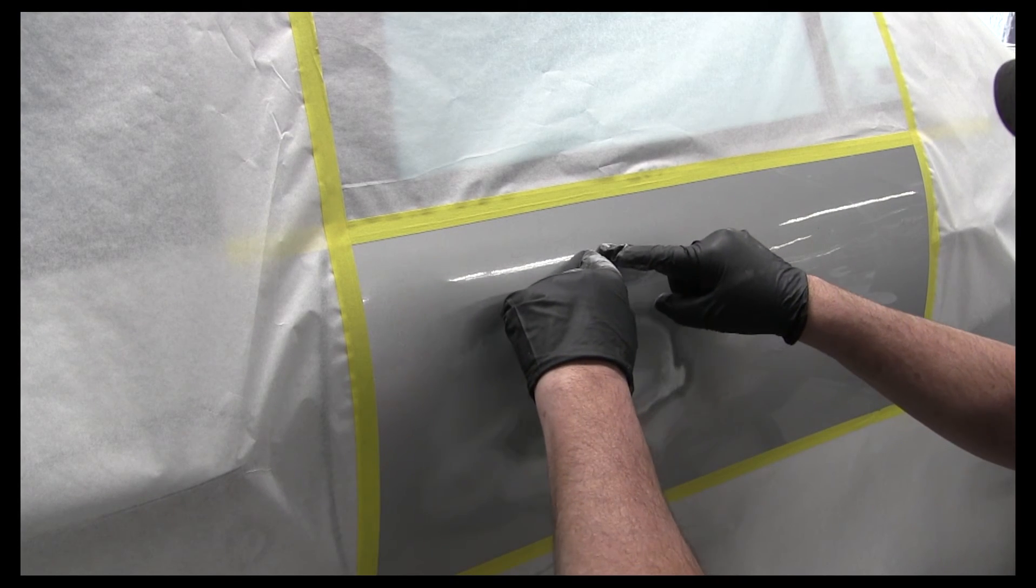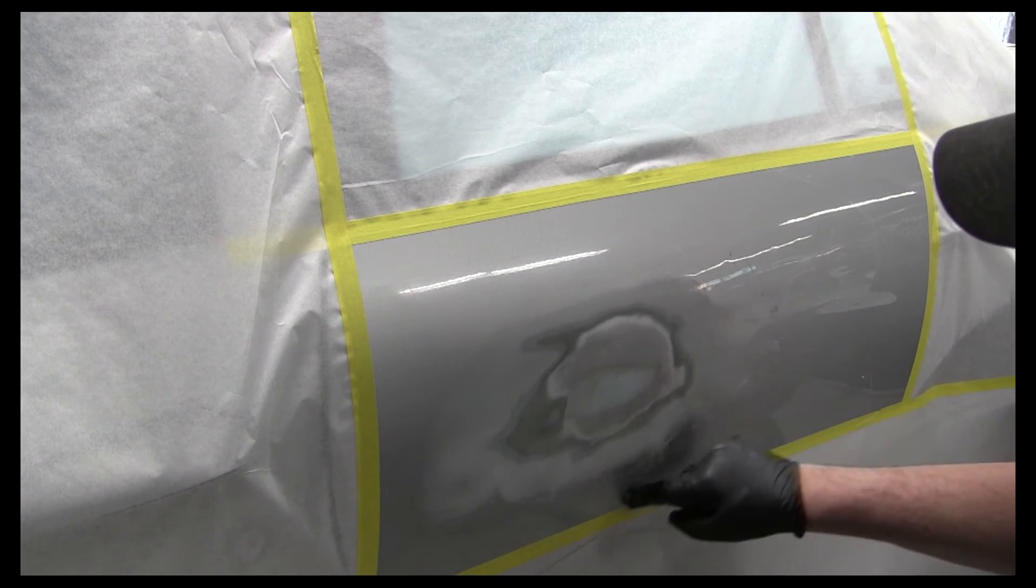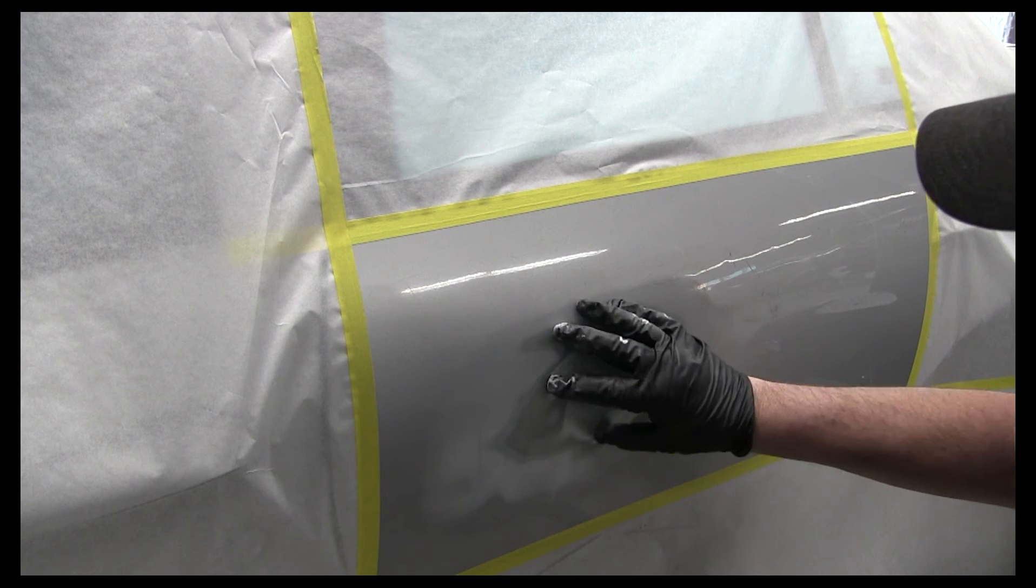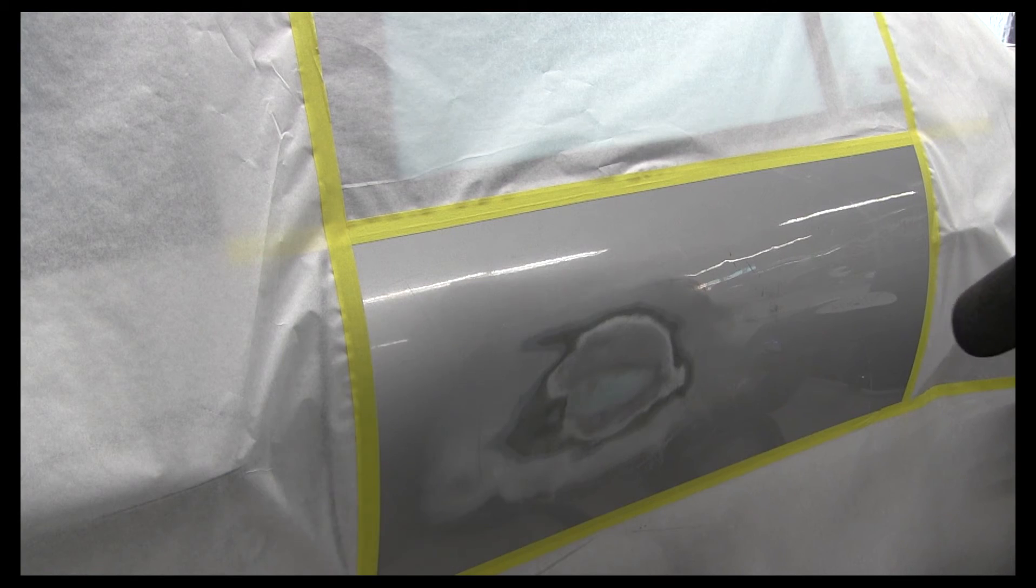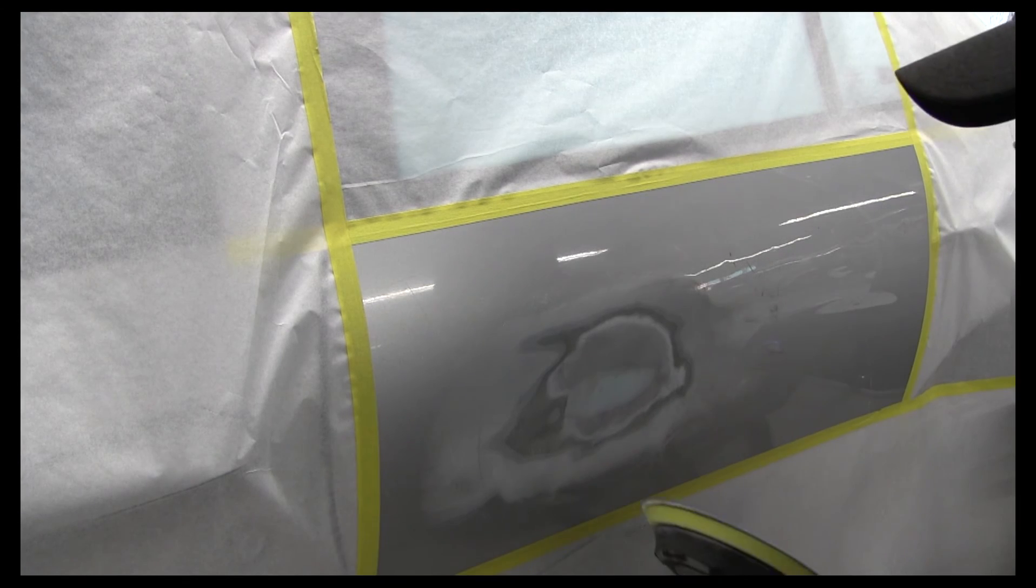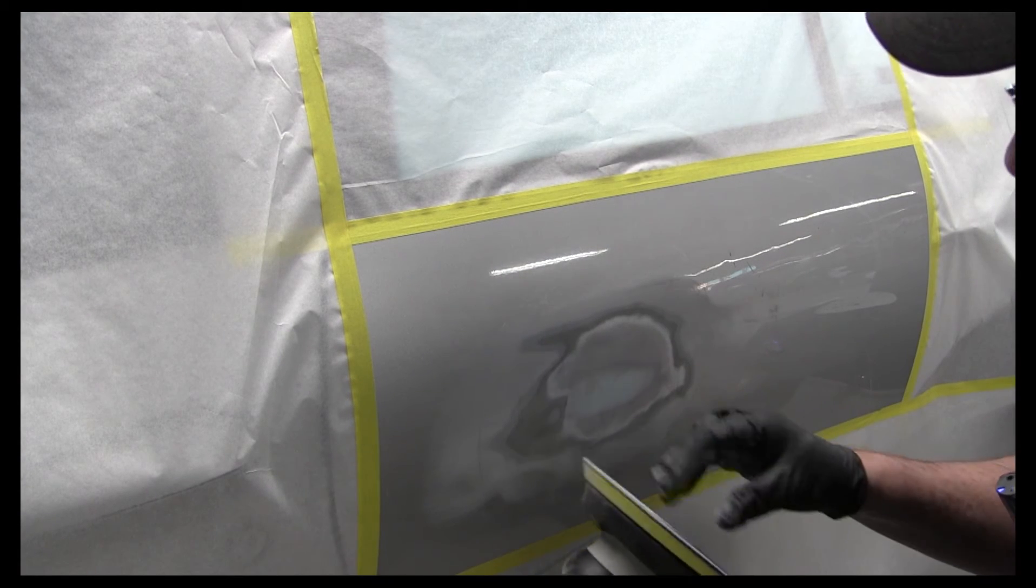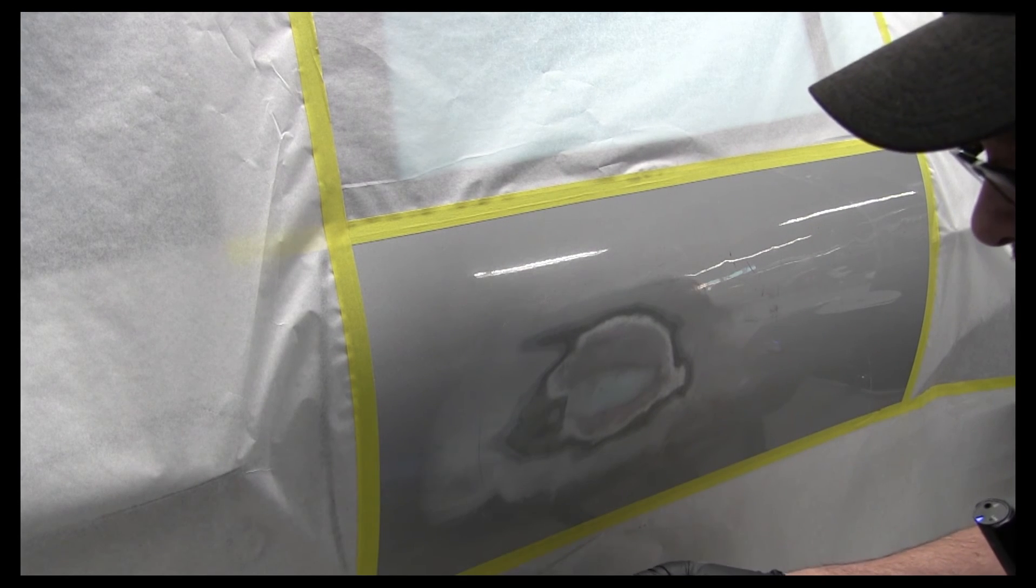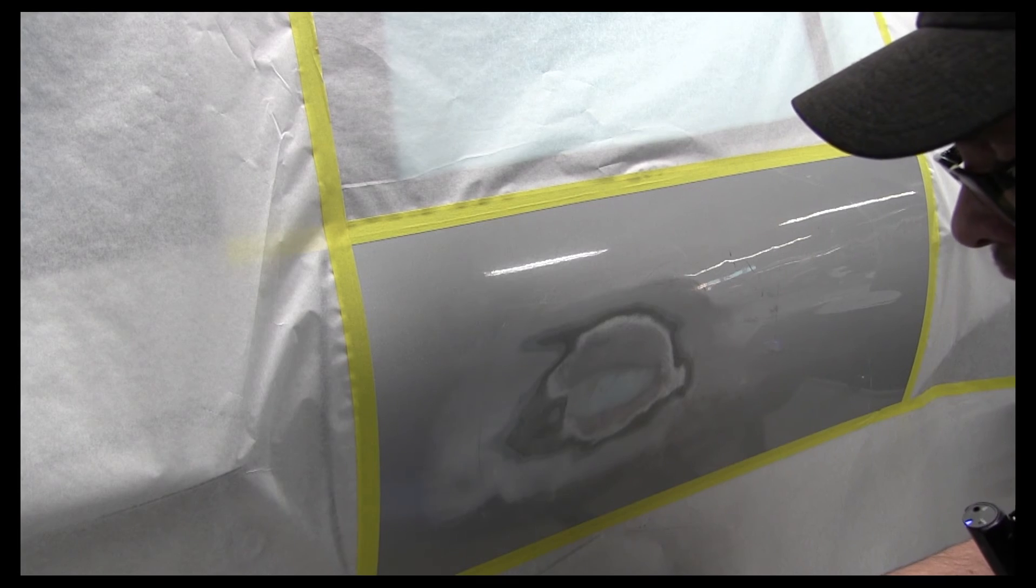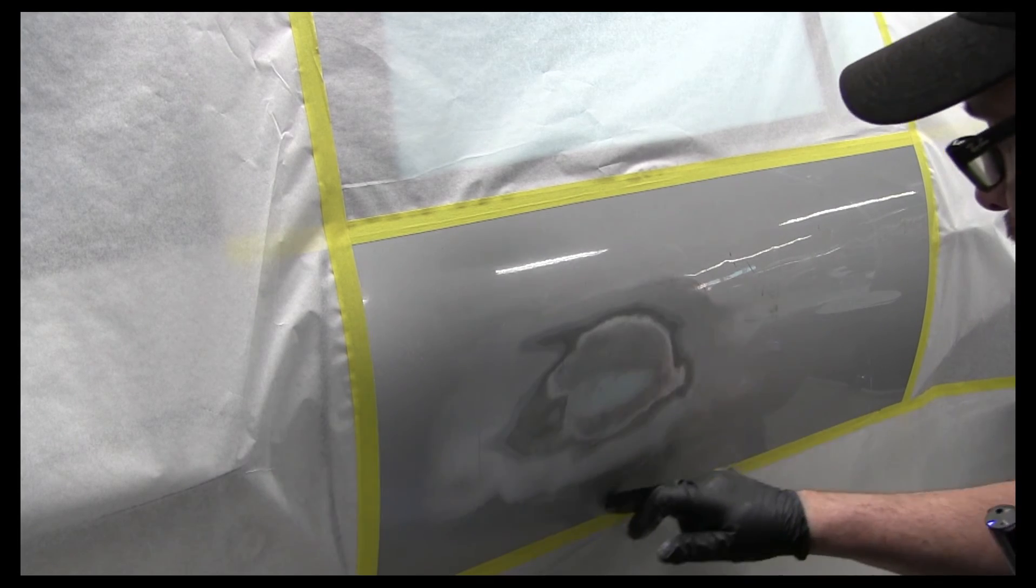I'm going to do one more step because we're probably going to prime a little bit bigger area. You don't want any of your primer getting on unsanded paint. So we're going to sand that with some 320. Don't throw this sandpaper away, very reusable.